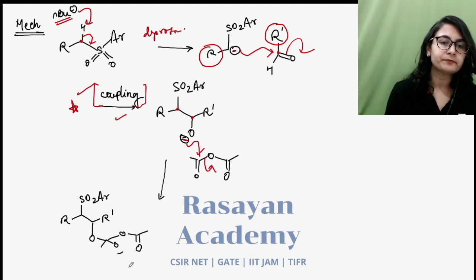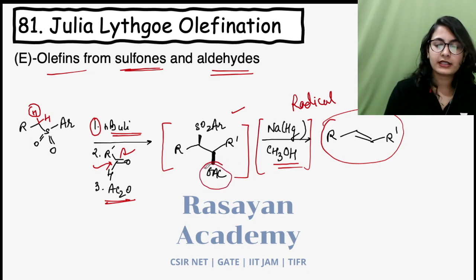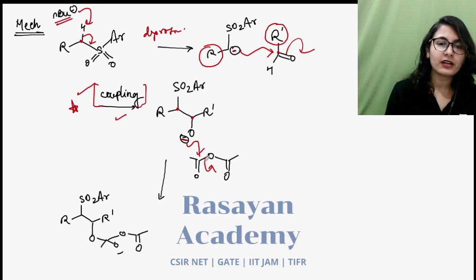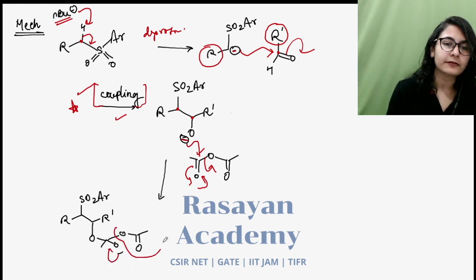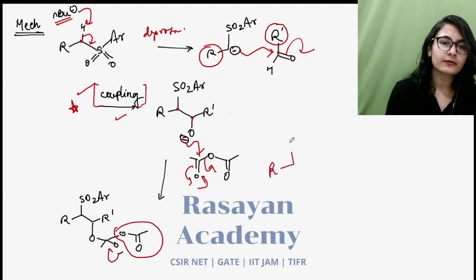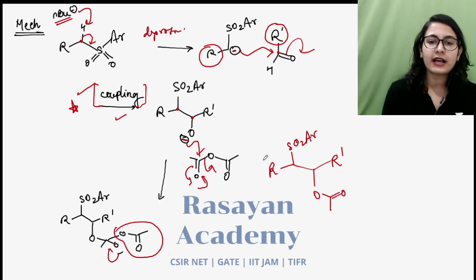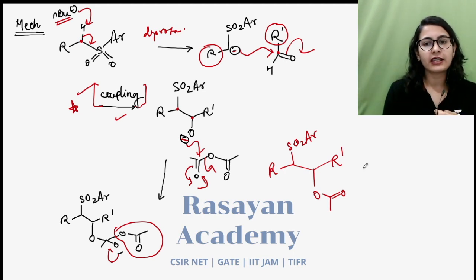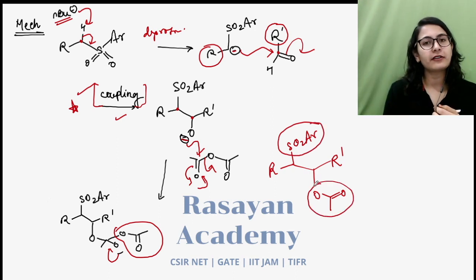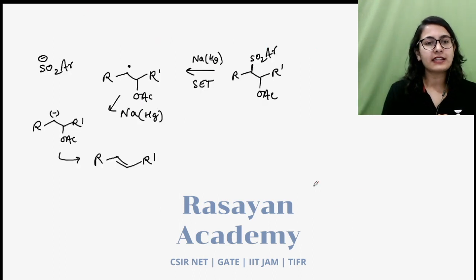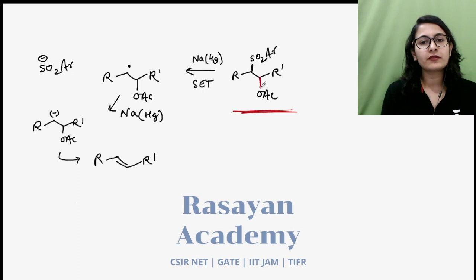This O⁻ is going to attack on the acetic anhydride and get acylated, giving an OAc group. The whole acetate group acts as a leaving group. So you get the intermediate RSO₂-CR-CR'(OAc). At this point, there is no selectivity yet — the two bulky groups simply prefer to stay far apart from each other. The selectivity comes in the second step, which is the reduction step.